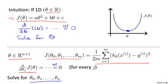If you work through the calculus and solve for the parameters theta zero through theta n, the derivation ends up being somewhat involved. What I'm going to do is just tell you what you need to know in order to implement this process — to find the values of theta that correspond to where the partial derivative equals zero, or equivalently the values that minimize the cost function J of theta. If you're less familiar with calculus, don't worry about it.